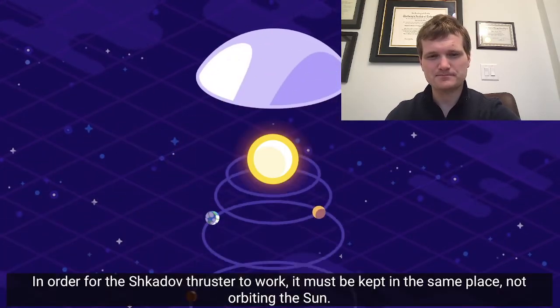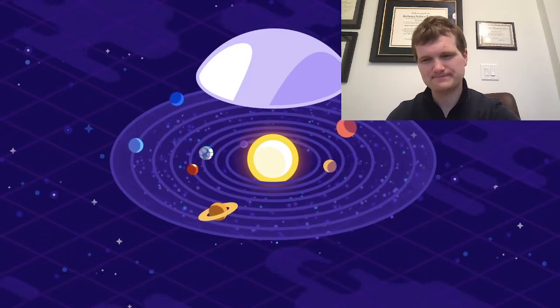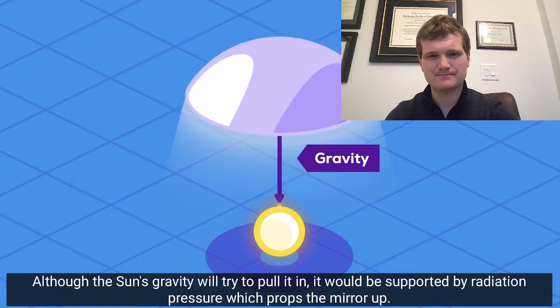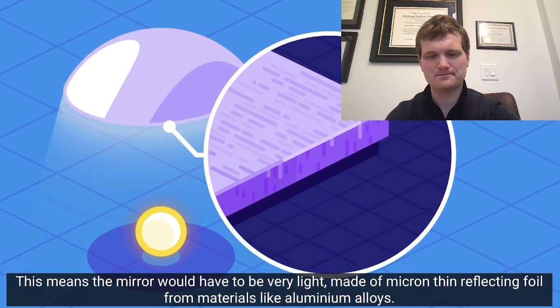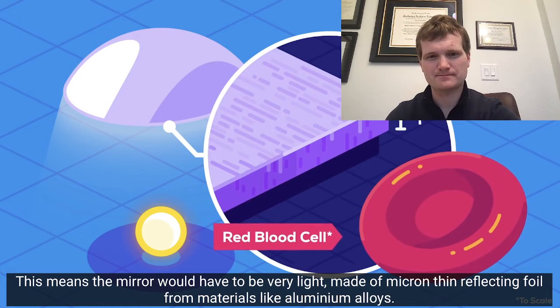In order for the Shkadov thruster to work, it must be kept in the same place, not orbiting the sun. Although the sun's gravity will try to pull it in, it would be supported by radiation pressure, which props the mirror up. This means the mirror would have to be very light, made of micron-thin reflecting foil from materials like aluminum alloys.